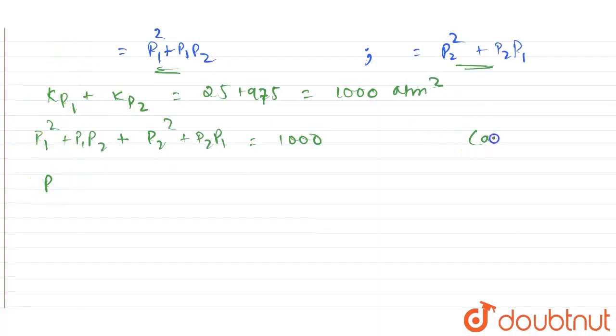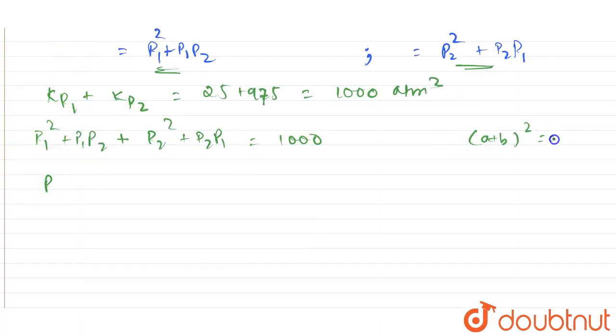If you can clearly see, this is of the form (A plus B) whole square, which equals A square plus 2AB plus B square. So this can be written as P1 square plus 2P1 P2 plus P2 square equal to 1000. Therefore, (P1 plus P2) whole square is equal to 1000.